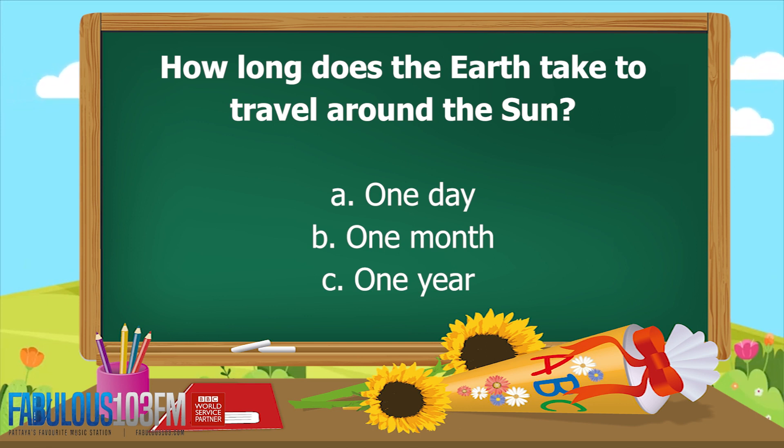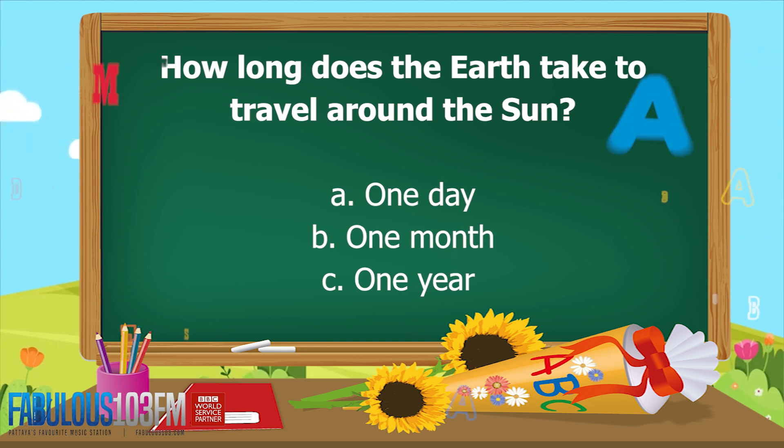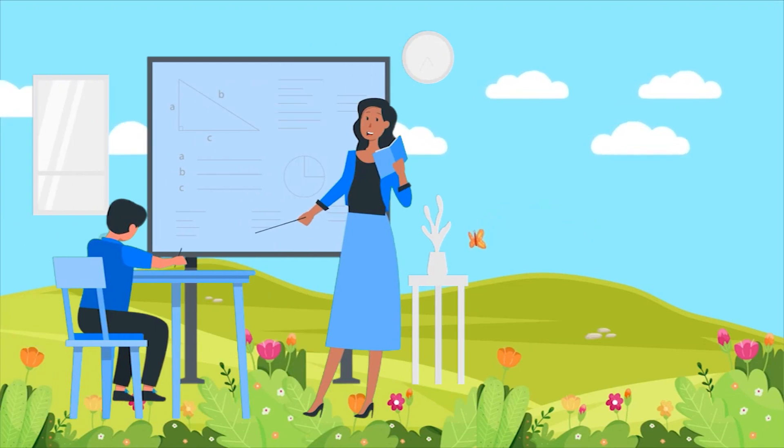And the last question for today: how long does earth take to travel around the Sun? Is it a) one day, b) one month, or c) one year? You've got a couple of days to think about those.